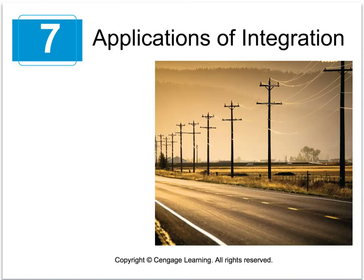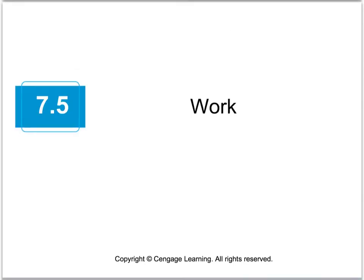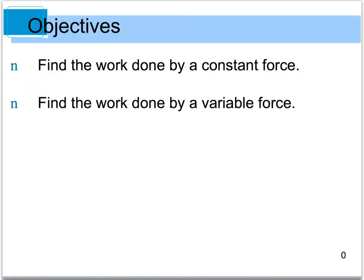Welcome back to chapter 7. Today we're going to look at section 7.5 which deals with work. We have two objectives: we're going to look at two different types of work — the work done by a constant force and the work done by a variable force. Work is important to engineers and scientists because sometimes it is necessary to find the amount of energy required to perform different types of jobs.